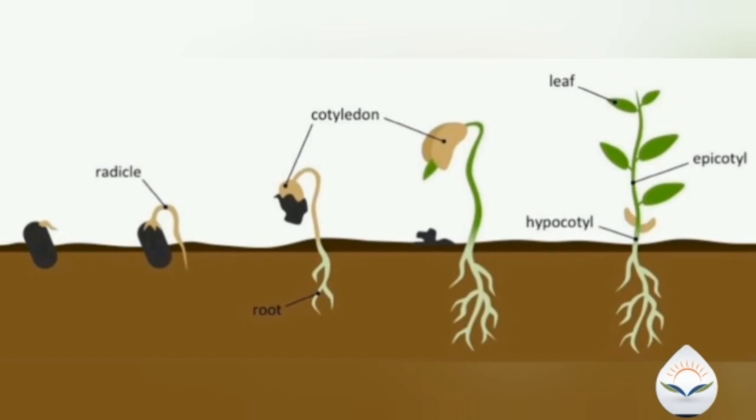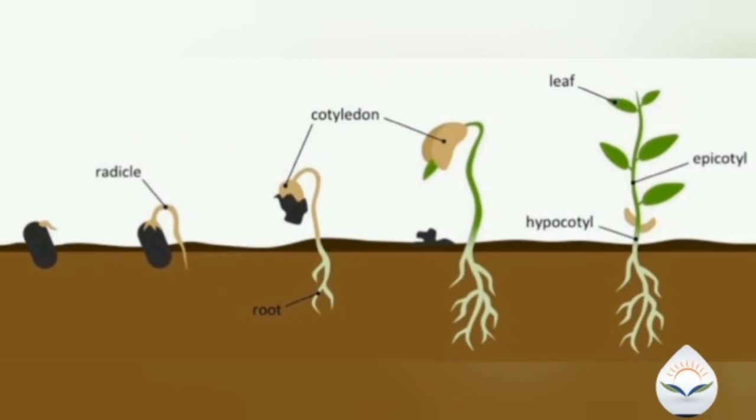By rupturing of the seed coat, the radicle emerges to form a primary root. The seed starts absorbing underground water.